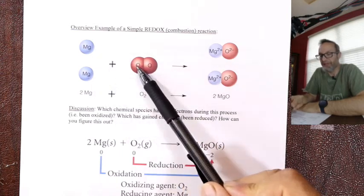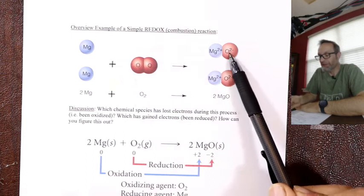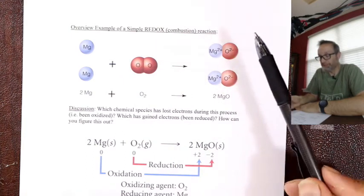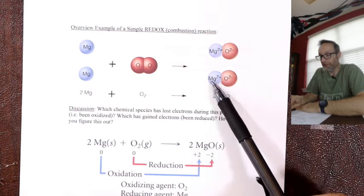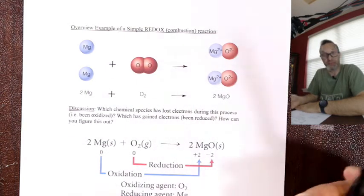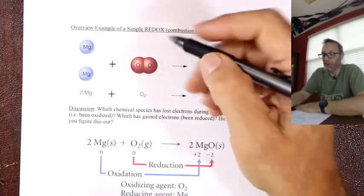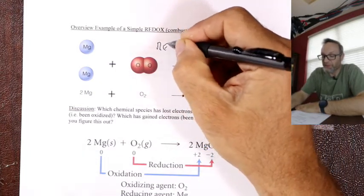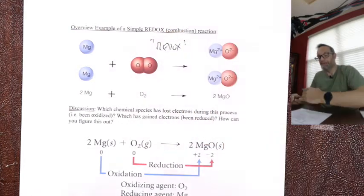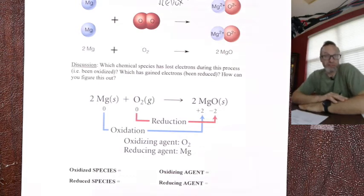They're just atoms and a molecule. The electron jumps across to make Mg²⁺ and O²⁻, so I've made an ionic compound — electron transfer has occurred. Oxidation is loss, reduction is gain. All processes like this are redox. So which one's oxidized, which one's reduced? Who lost, who gained?